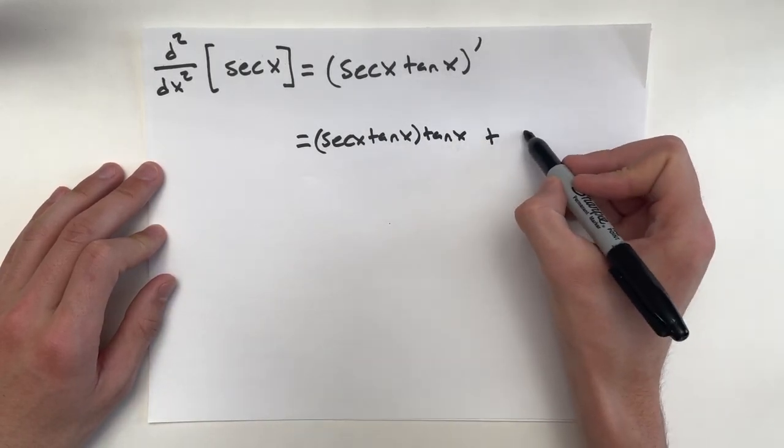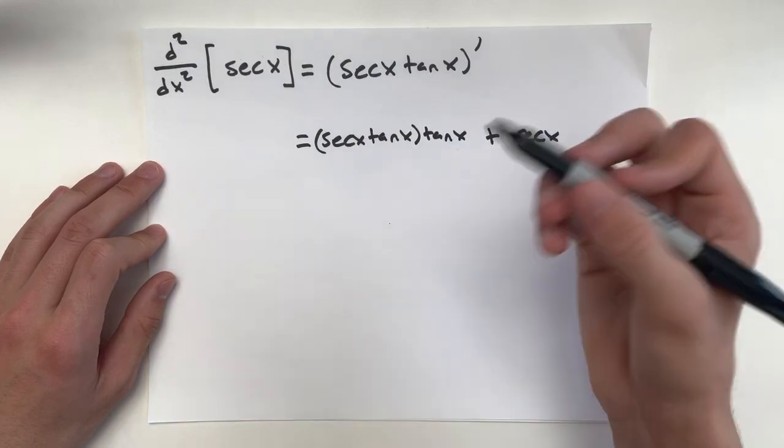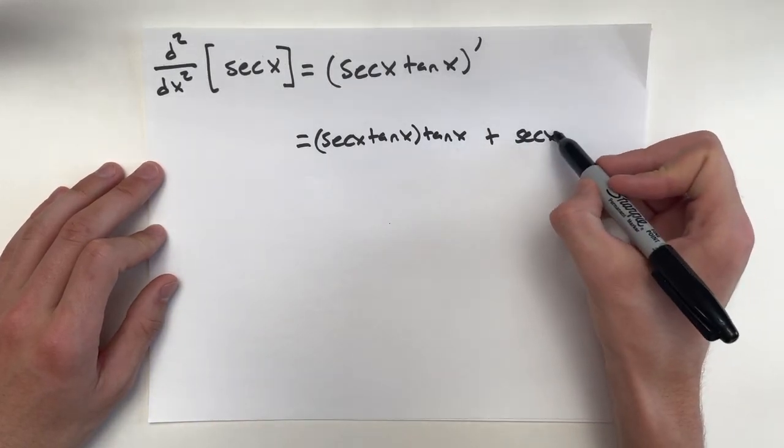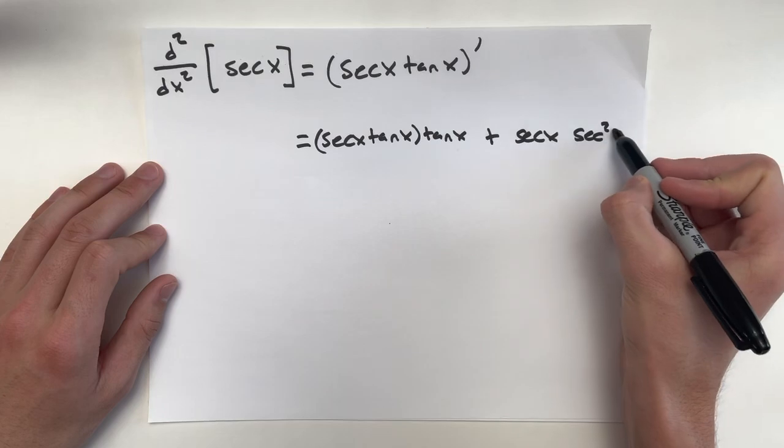plus the first term, secant x, times the derivative of that second term, which is secant squared x.